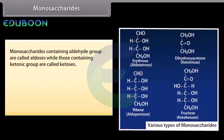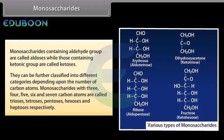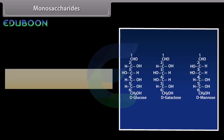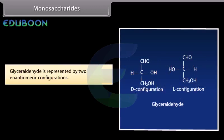Monosaccharides containing aldehyde group are called aldoses, while those containing ketonic group are called ketoses. They can be further classified into different categories depending upon the number of carbon atoms. Monosaccharides with three, four, five, six and seven carbon atoms are called trioses, tetroses, pentoses, hexoses and heptoses respectively. Three main aldohexoses which occur widely in nature are D-glucose, D-galactose and D-mannose. The letter D before the name of monosaccharides represents the configuration as derived from glyceraldehyde, which is represented by two enantiomeric configurations.